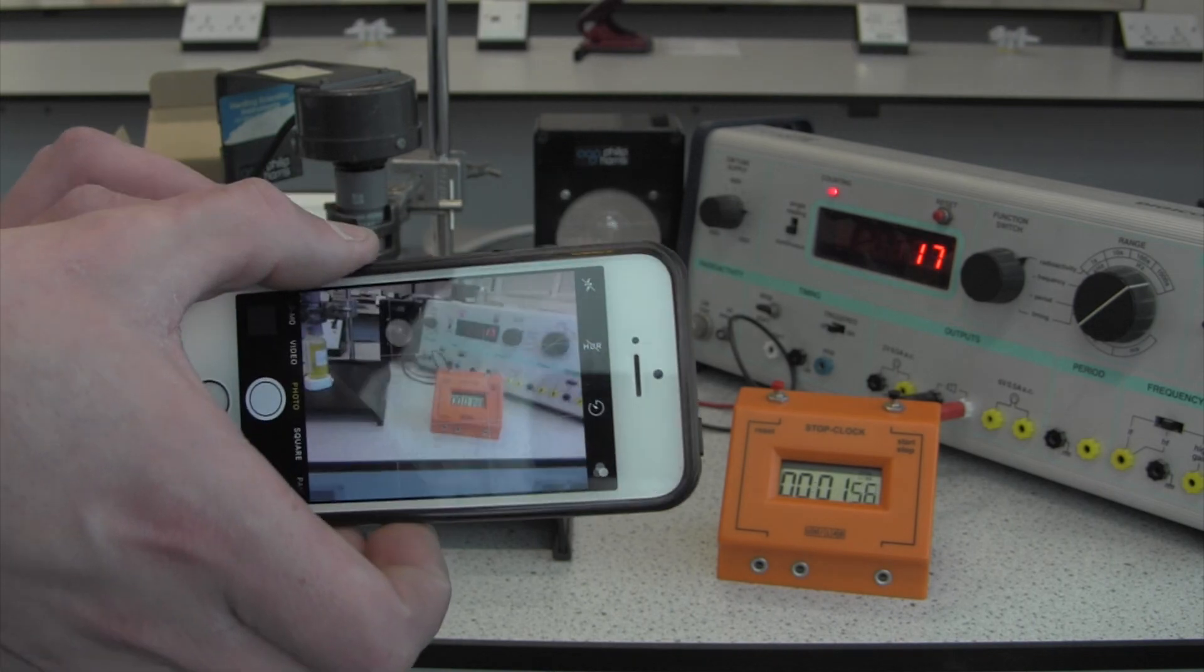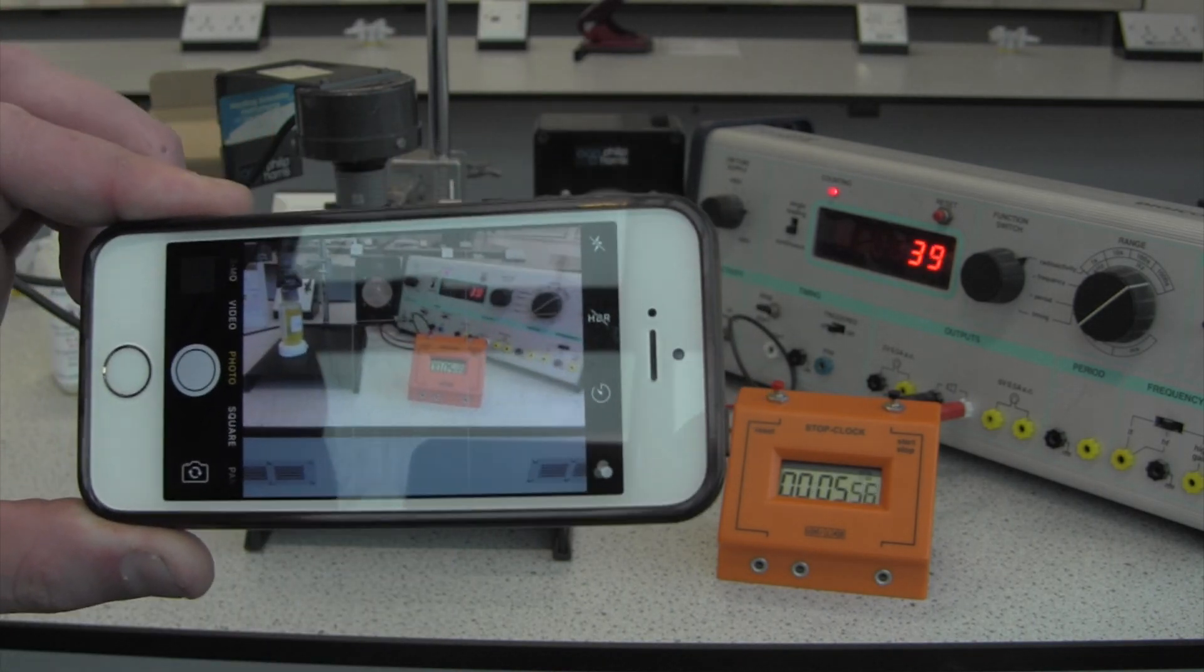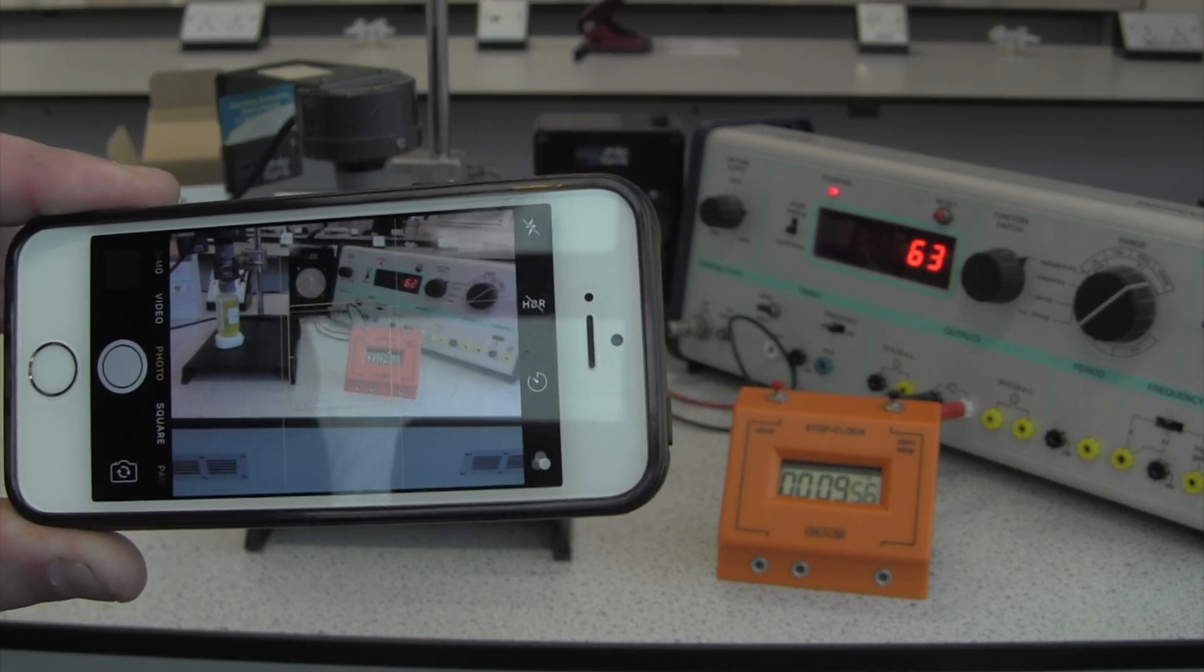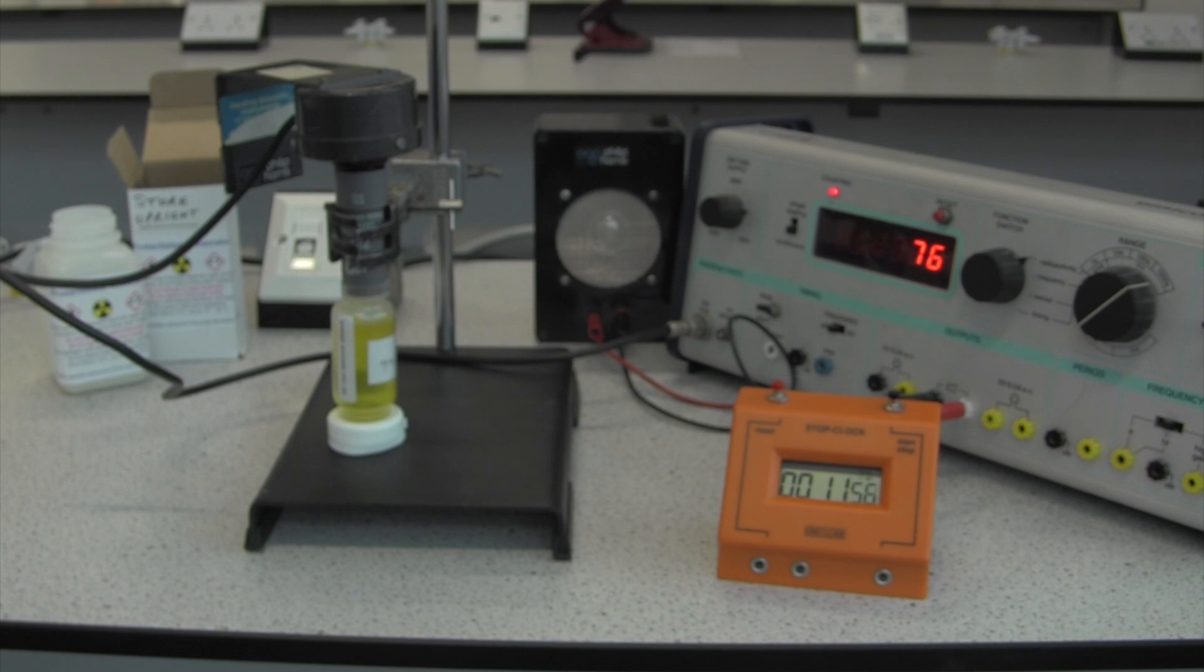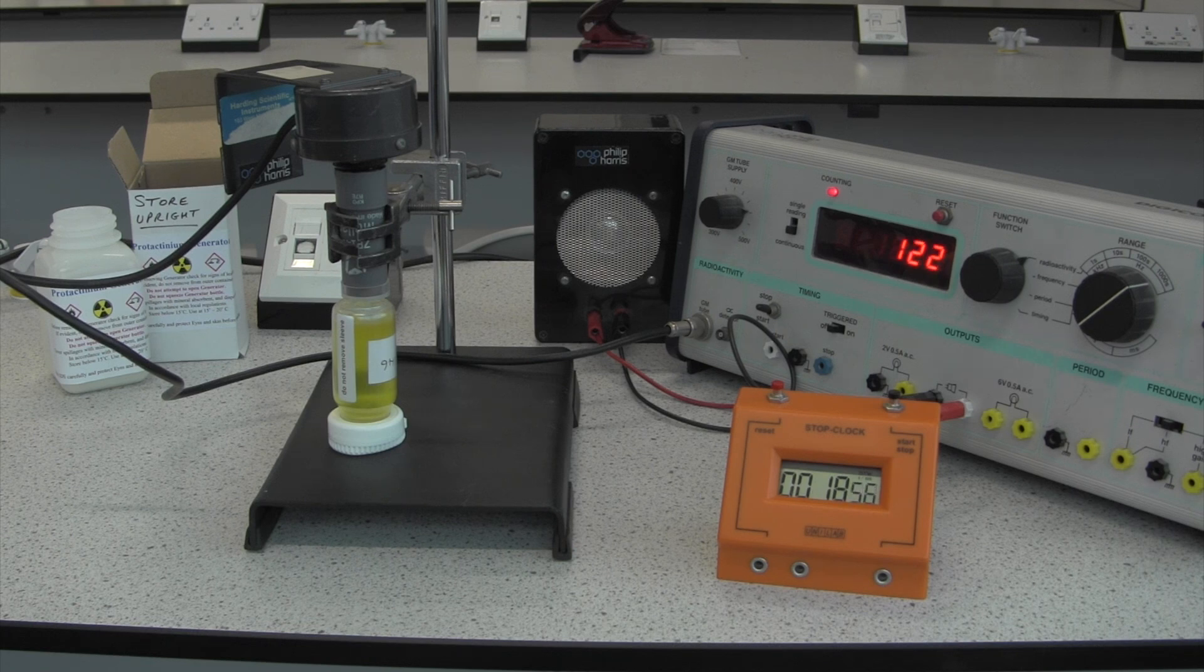And to work out the half-life, you're going to need to review the footage that you've taken, and stop the video at certain intervals, measure the count rate, or write down the count rate, and that will give you your data.